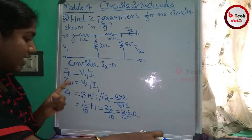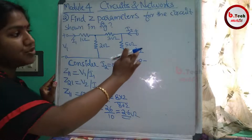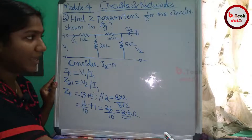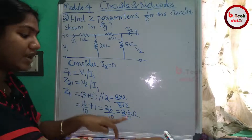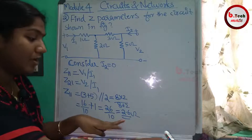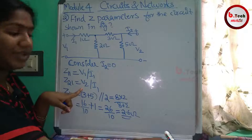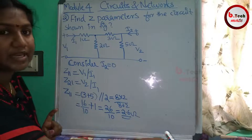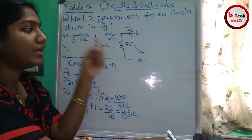Now Z21 is V2 divided by I1. We need to express V2 in terms of I1. V2 is the voltage across the 5 ohm resistance, expressed in I1 terms. We can cancel I1 in the denominator once we express the voltage across 5 ohm as I1 times the resistance.